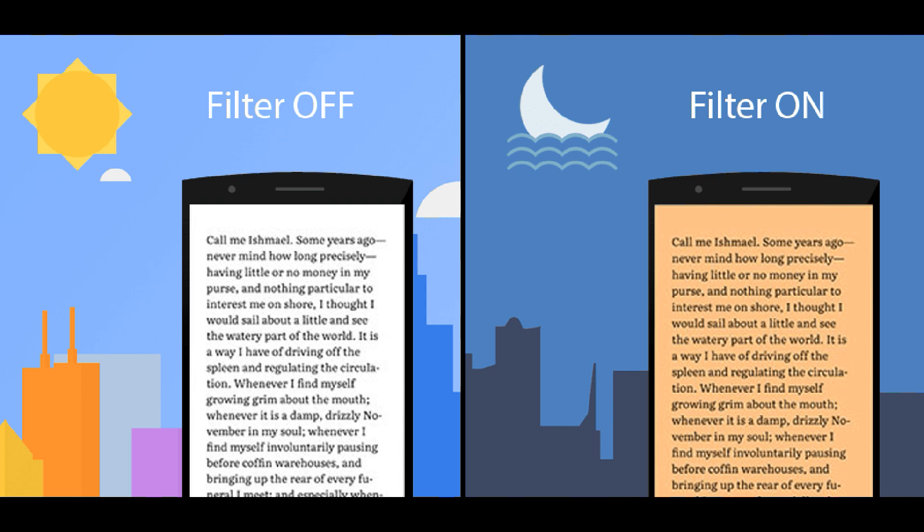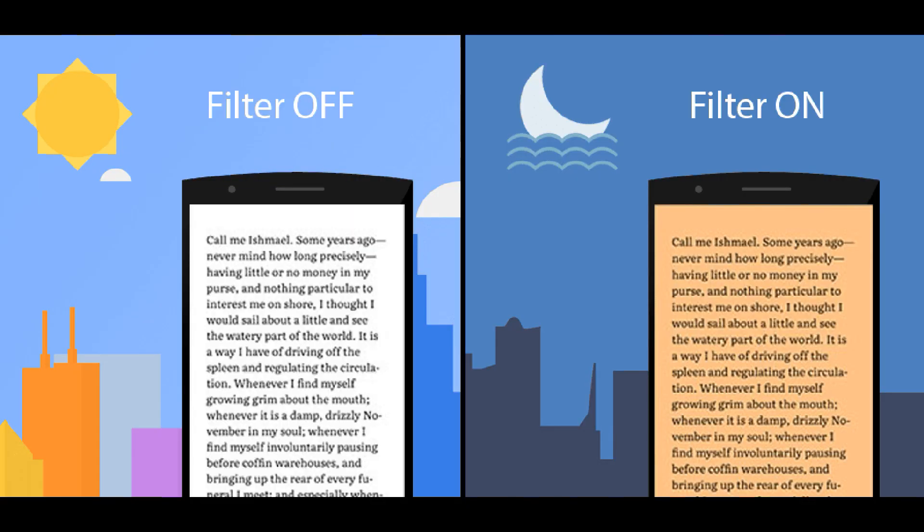If you are exposed to blue light, you can enable the blue light filter to make the display warmer. This is especially recommended for nighttime use. It can reduce eye strain and improve sleep quality. A lot of research supports this. If you have a smartphone, using the blue light filter will be safe for your eyes.